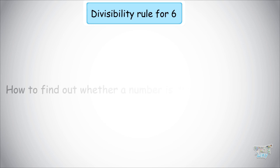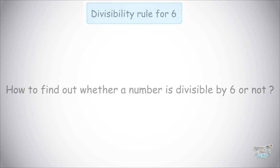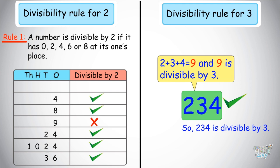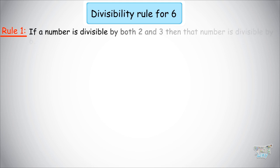We will be learning how to find out whether or not a number is divisible by 6. We have already learned the rules of divisibility for 2 and 3. The rule is: if a number is divisible by both 2 and 3, then the number is divisible by 6.